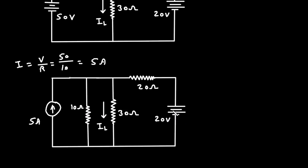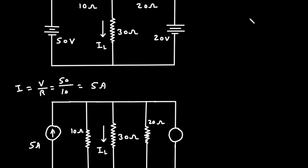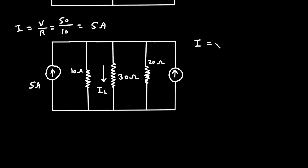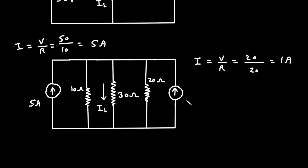Now we will do the same thing with this 20 volt source and this 20 ohm resistance. We change the 20 ohm from series to parallel and convert the 20 volt voltage source to a current source. The positive side is on the upper side, so the current direction is upward. Using I = V/R, the value is 20 divided by 20, which equals 1 ampere.